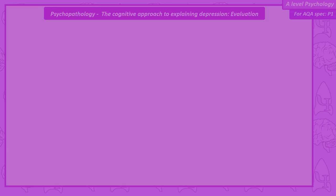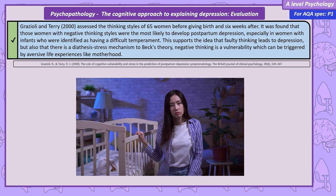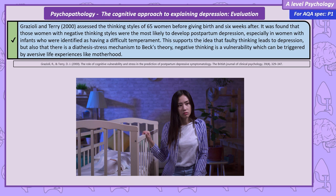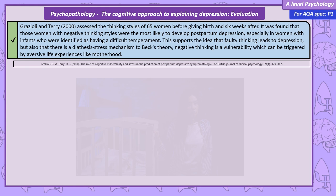There is research that supports the role of irrational thoughts in depression. Grisoli and Terry recorded the thinking styles of 65 women before giving birth, and again six weeks after the women gave birth. They found that the women with negative thinking styles were the most likely to develop depression, especially in women with infants who were identified as having difficult temperaments. This supports the idea that faulty thinking leads to depression, and the fact that women with the difficult children are most at risk supports the idea of a diathesis-stress mechanism to Beck's theory — negative thinking is a vulnerability which adverse life experiences like motherhood can trigger.